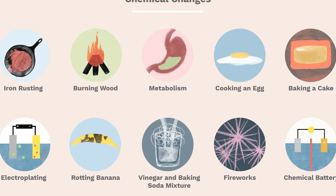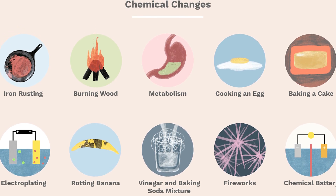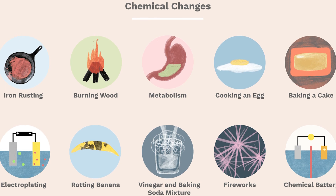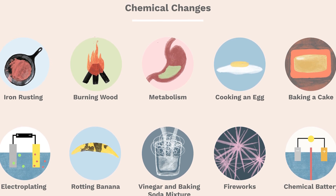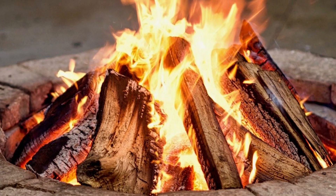For example, burning of oil. Desirable changes — the changes which are useful to us and to our environment and decided by us are known as desirable changes.